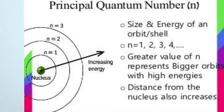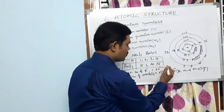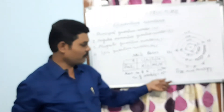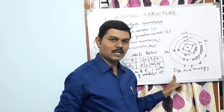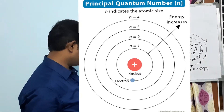Based on the n number, the size and energy of the shell also increases. The shell closest to the nucleus has less energy, and the shell farthest from the nucleus has more energy. So as the n number increases, size and energy also increase. This is the complete information about the principal quantum number: proposed by Niels Bohr, denoted by small n, with values 1, 2, 3, 4 representing K, L, M, N shells.